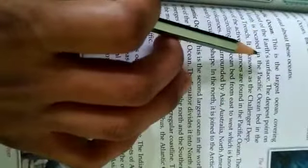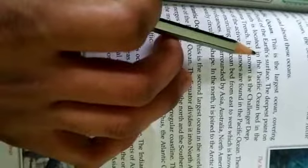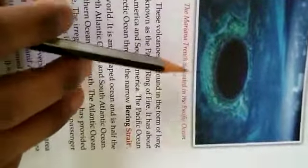The deepest point on the Earth is located in the Pacific Ocean bed in the Mariana Trench. Look at this. The Mariana Trench is located in the Pacific Ocean. It is known as the Challenger Deep.